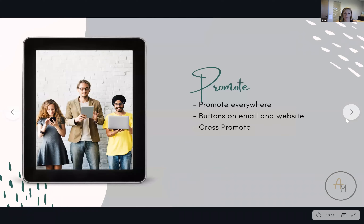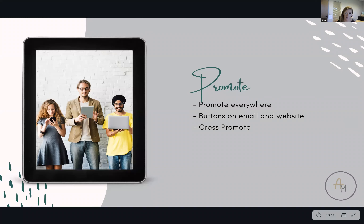Next up we have promote. This is super important if you want to grow organically because you need to get your name out there. Ways to do this include using buttons and links for your email and website, and cross-promoting between your website, Instagram, KW app — all of that. Make sure your information is easy to find in one place on all of these different platforms, funneling into one area. If you want people drawn to your Facebook page, put a Facebook button on every single thing — your email, Instagram, everything.